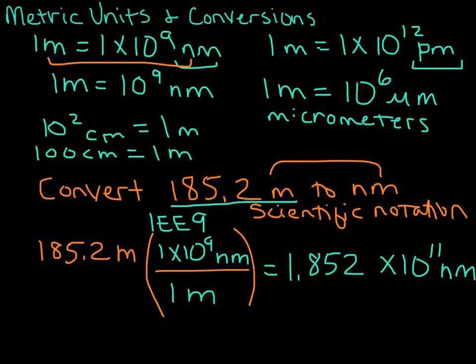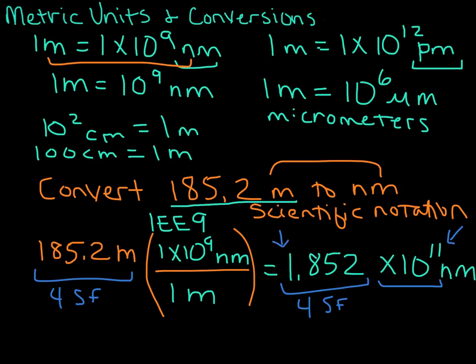Notice that we started with four sig figs, and we need to keep four sig figs in our answer. The exponent does not count as significant figures — we're only going to count the number in front of the exponent. For correct scientific notation, we only have one number before the decimal place, then we write out the rest of our significant figures, then times 10 to whatever power we have — in this case times 10 to the 11th power. Starting with four sig figs, ending with four sig figs.